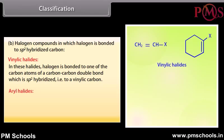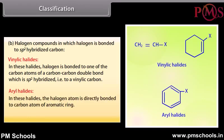Aryl halides: in these halides, the halogen atom is directly bonded to a carbon atom of the aromatic ring. For example, halobenzene.